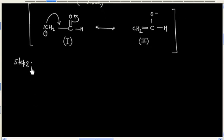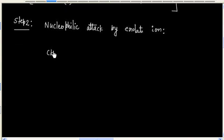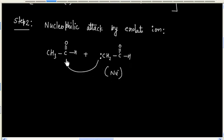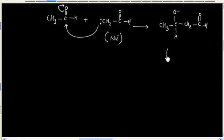The next step is nucleophilic attack by the enolate ion. So we have another molecule of aldehyde. The enolate ion acts as a nucleophile, and we will have a nucleophilic attack. The final product of this step is an alkoxide ion.